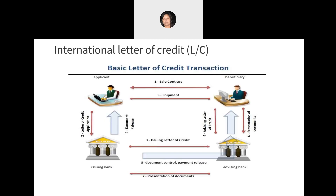With the help of a diagram, we can understand the letter of credit process. A letter of credit, abbreviated as LC, is typically issued by a bank at the request of an importer. It states that the bank will pay a specified sum of money to the beneficiary — the exporter — on presentation of particular specified documents. Transaction step nine in the diagram refers to the release of documents.